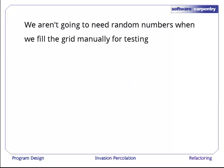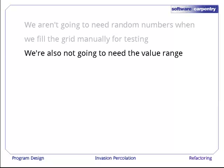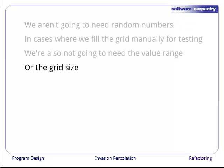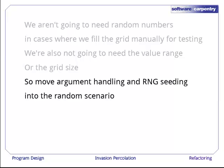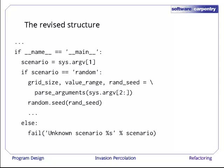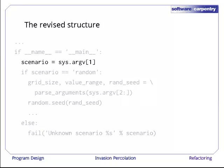We're not going to need random numbers when we fill the grid manually for testing. We're also not going to need the value range or the grid size. Let's move argument handling and random number generation seeding into the if branch that handles the random scenario. Once we make this change, we determine the scenario by looking at the first command line argument.